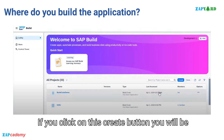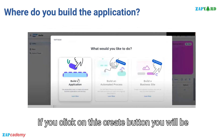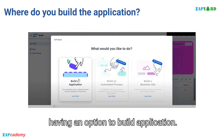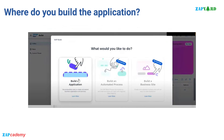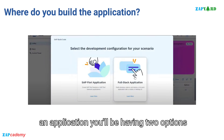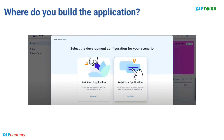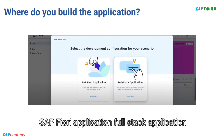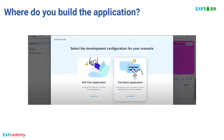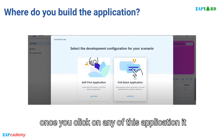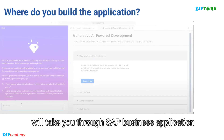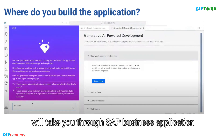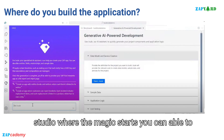If you click on the Create button, you will have an option to build an application. Just click on Build an Application. You will be presented with two options: SAP Fiori application or full stack application. Once you click on any of these options, it will take you through SAP Business Application Studio where the magic starts.